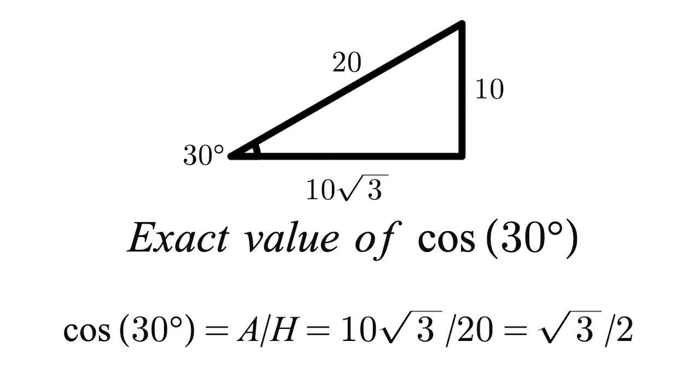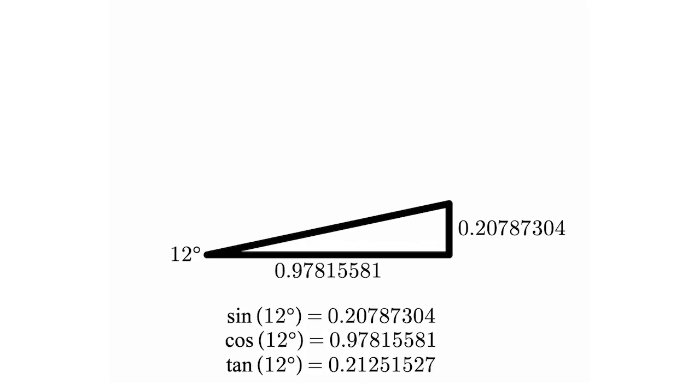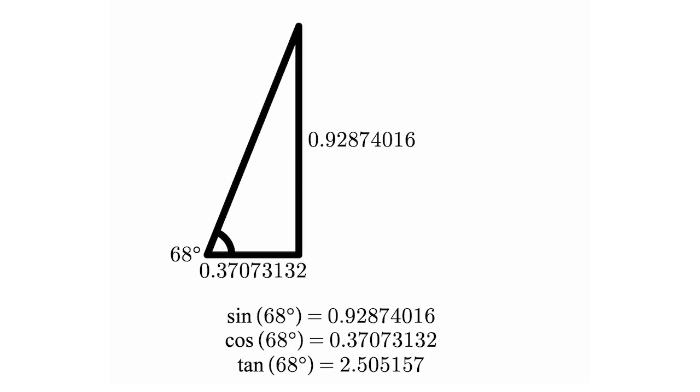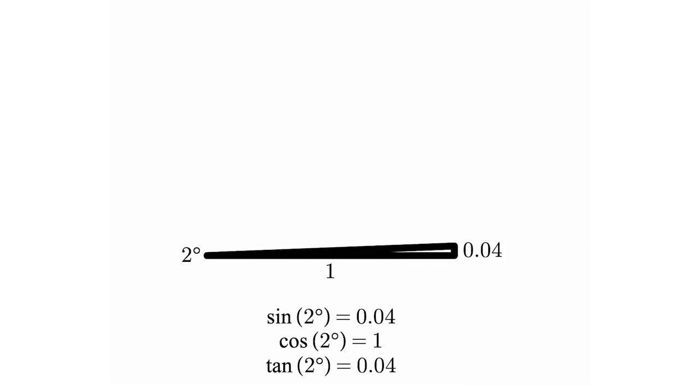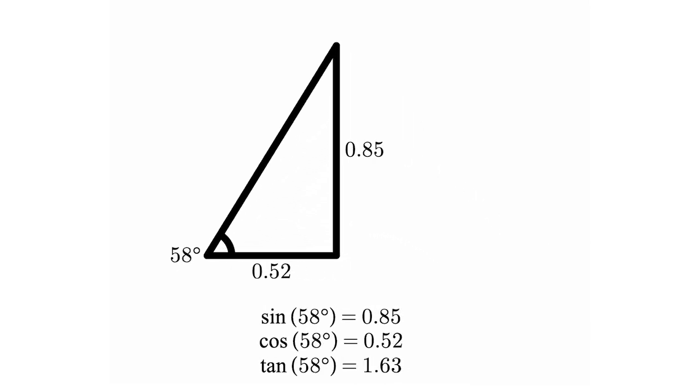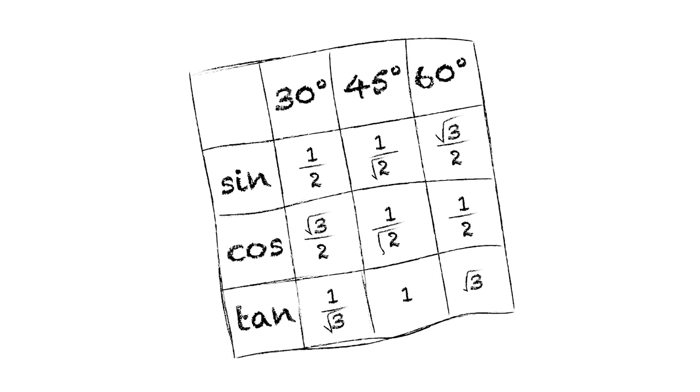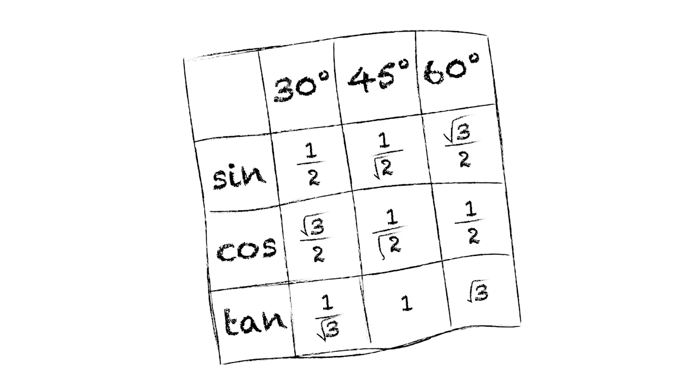This is a perfect segue for exact value tables. In trigonometry, ratios can get quite messy. We aren't going to write down all of these decimals, so we round them to a few decimal places. However, some angles yield ratios in which we can determine the exact value of.